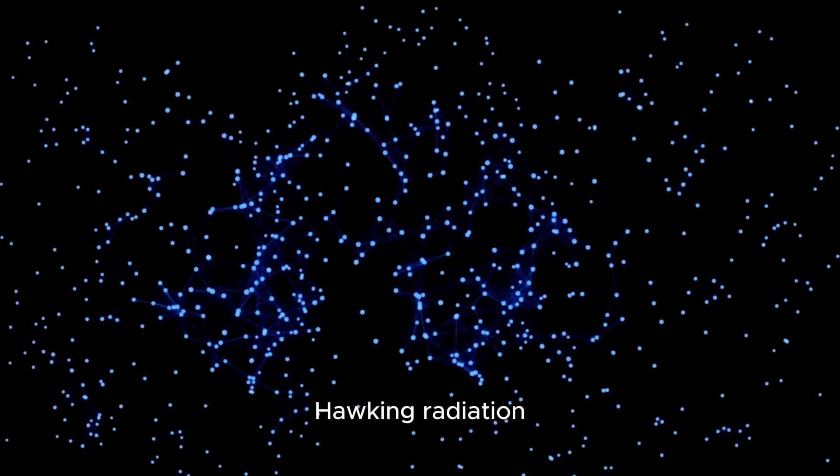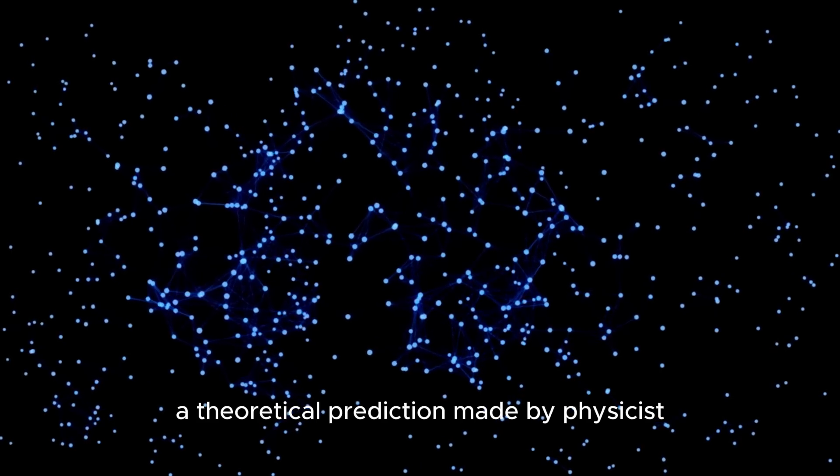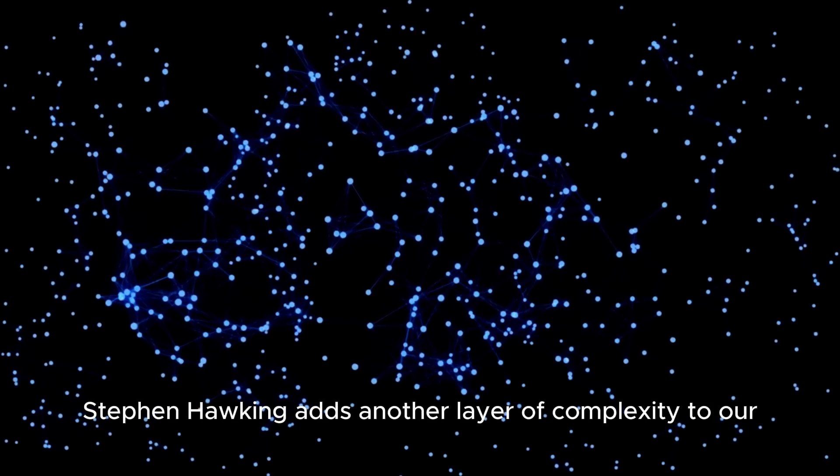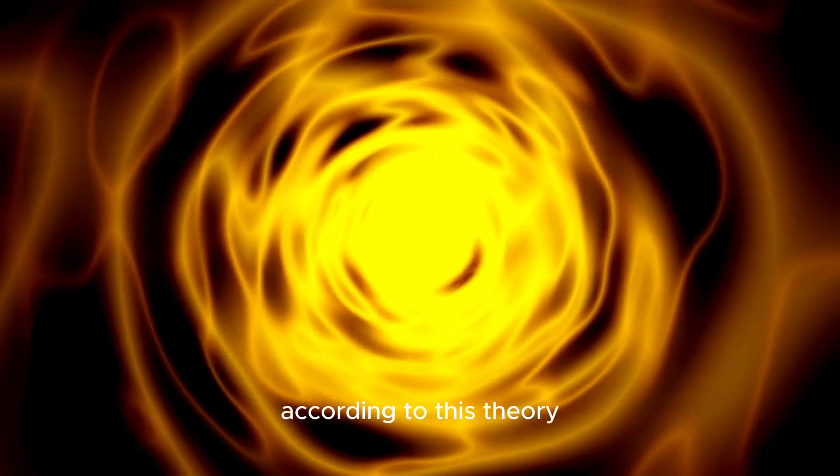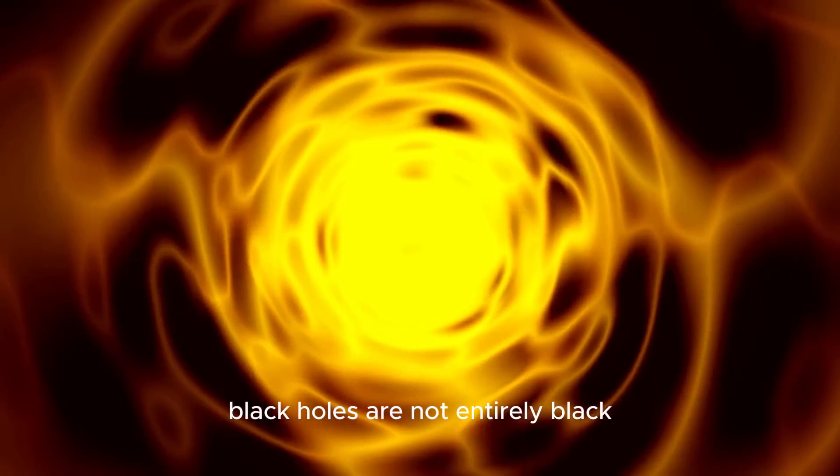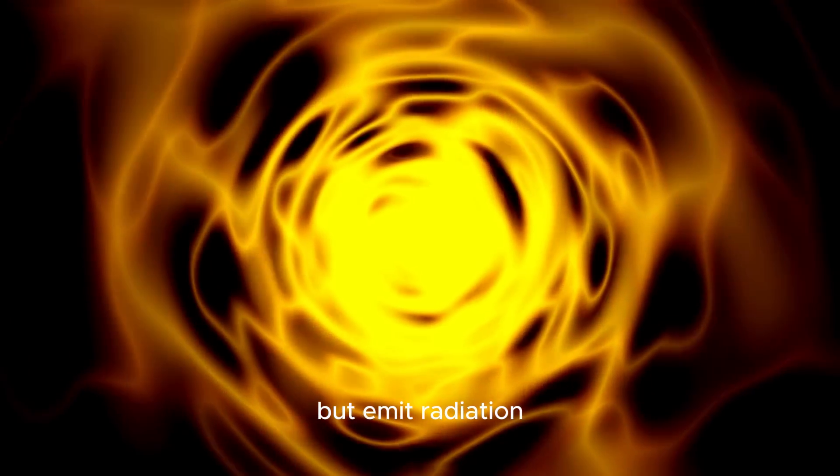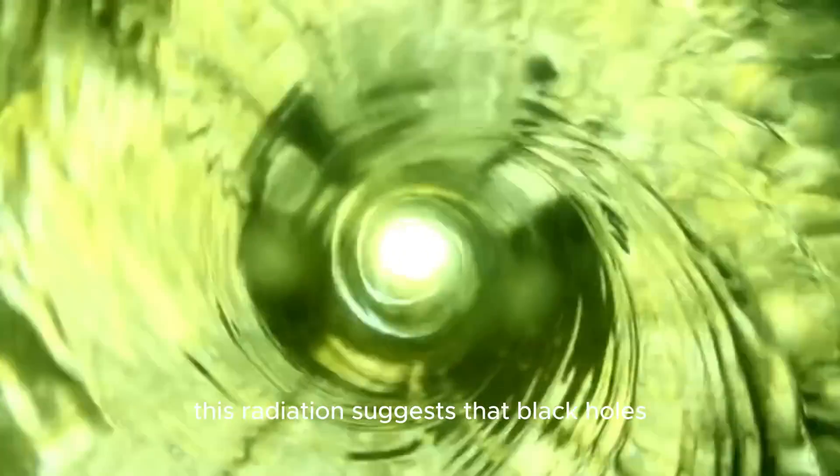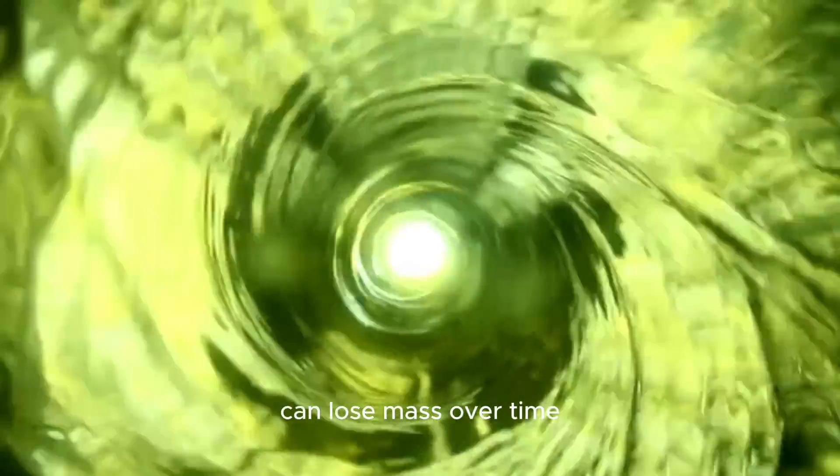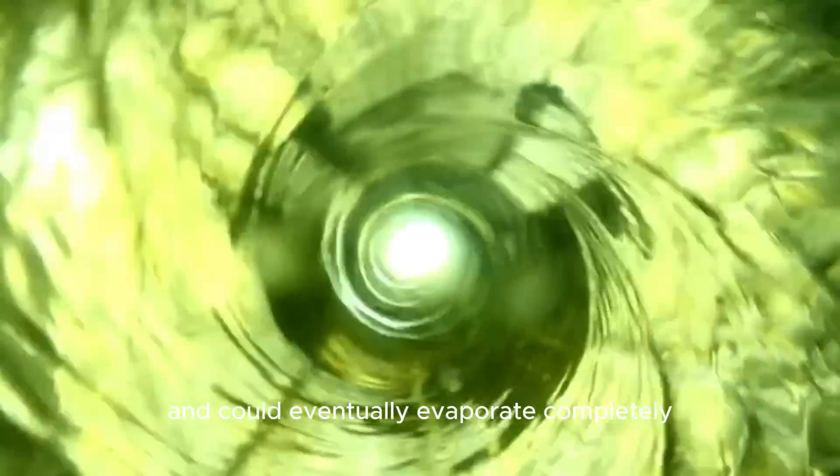Hawking radiation, a theoretical prediction made by physicist Stephen Hawking, adds another layer of complexity to our understanding of black holes. According to this theory, black holes are not entirely black but emit radiation due to quantum effects near the event horizon. This radiation suggests that black holes can lose mass over time and could eventually evaporate completely.